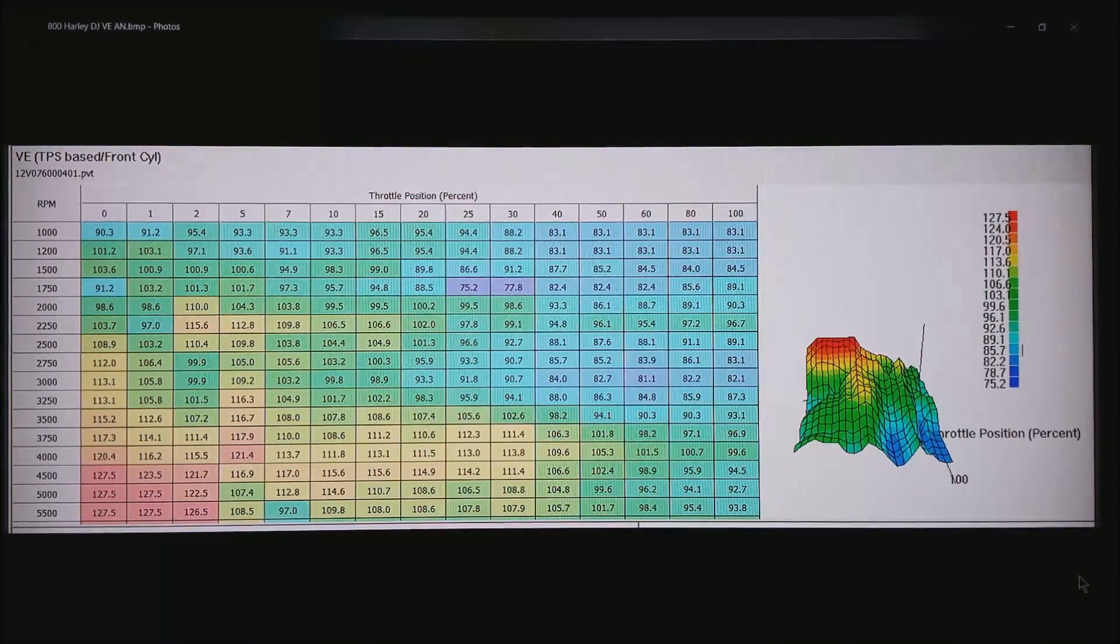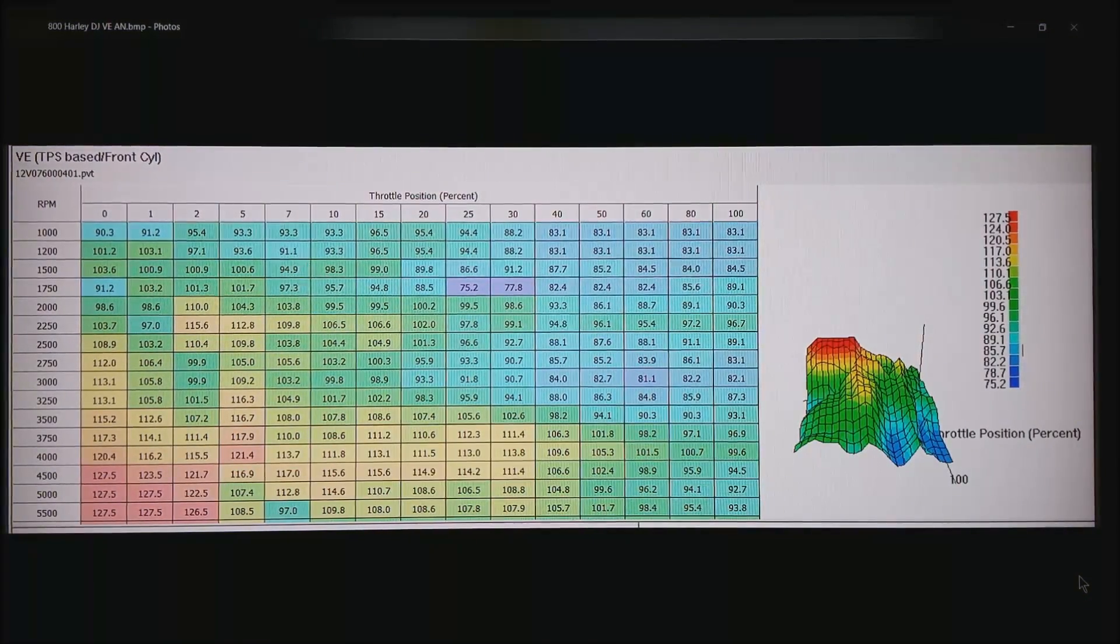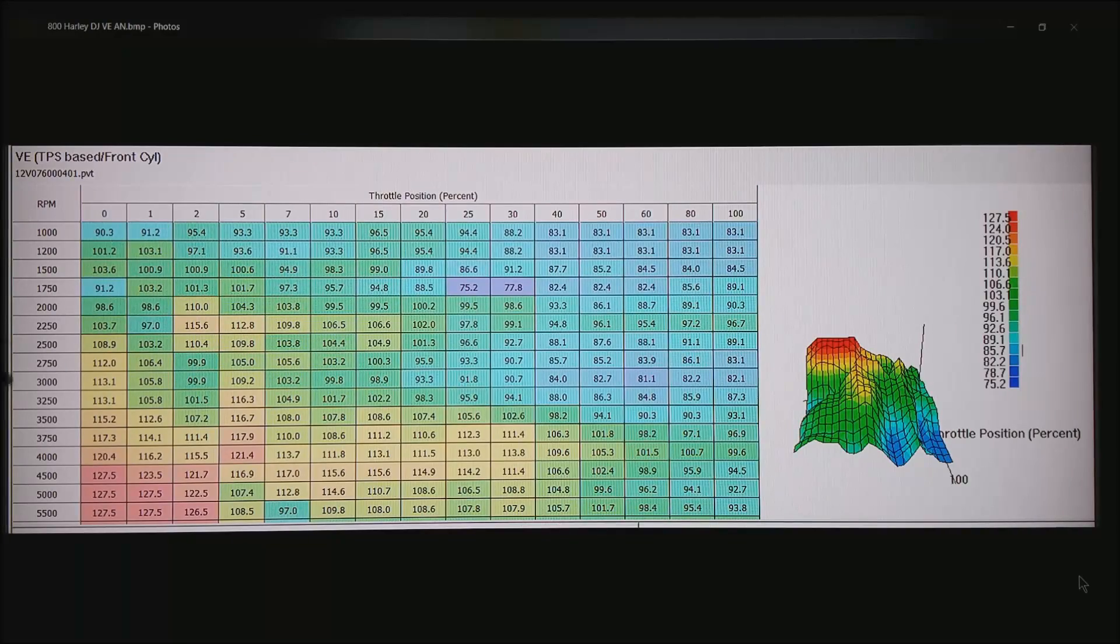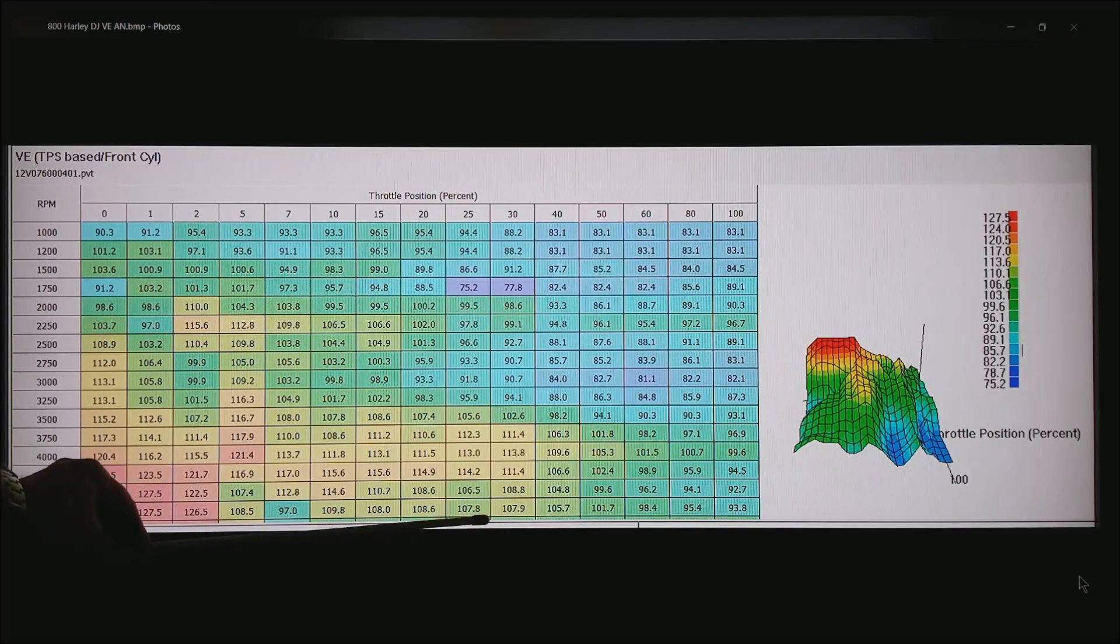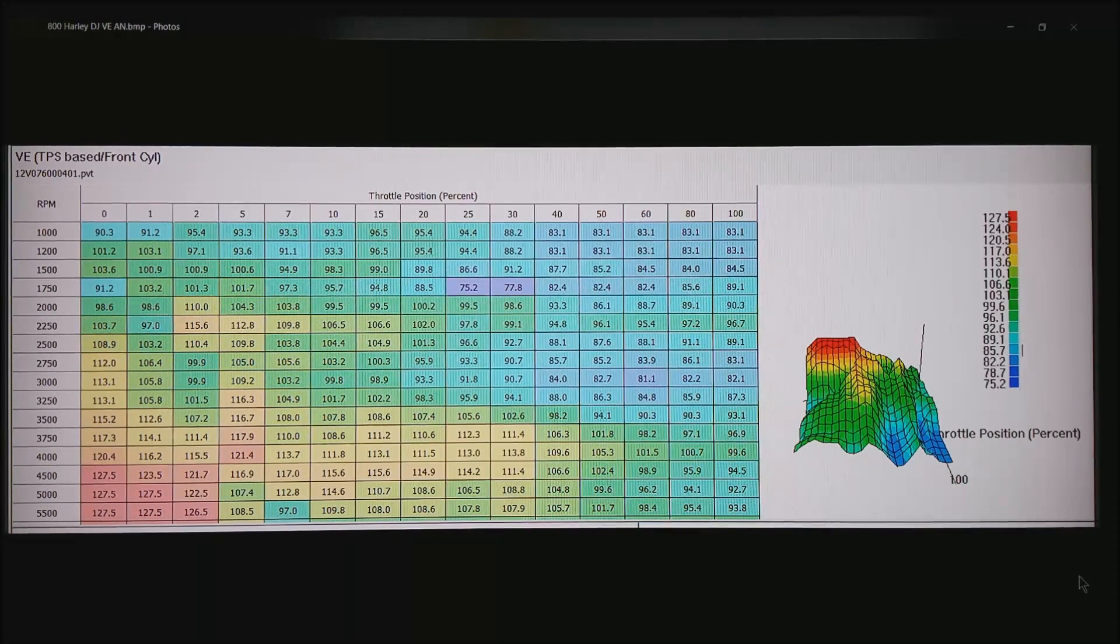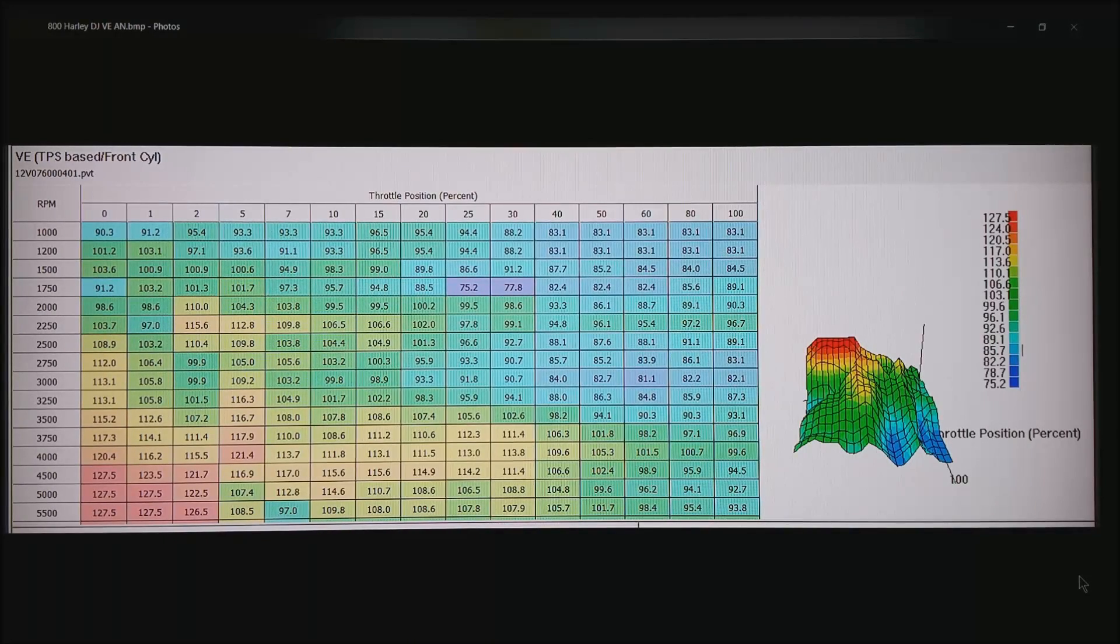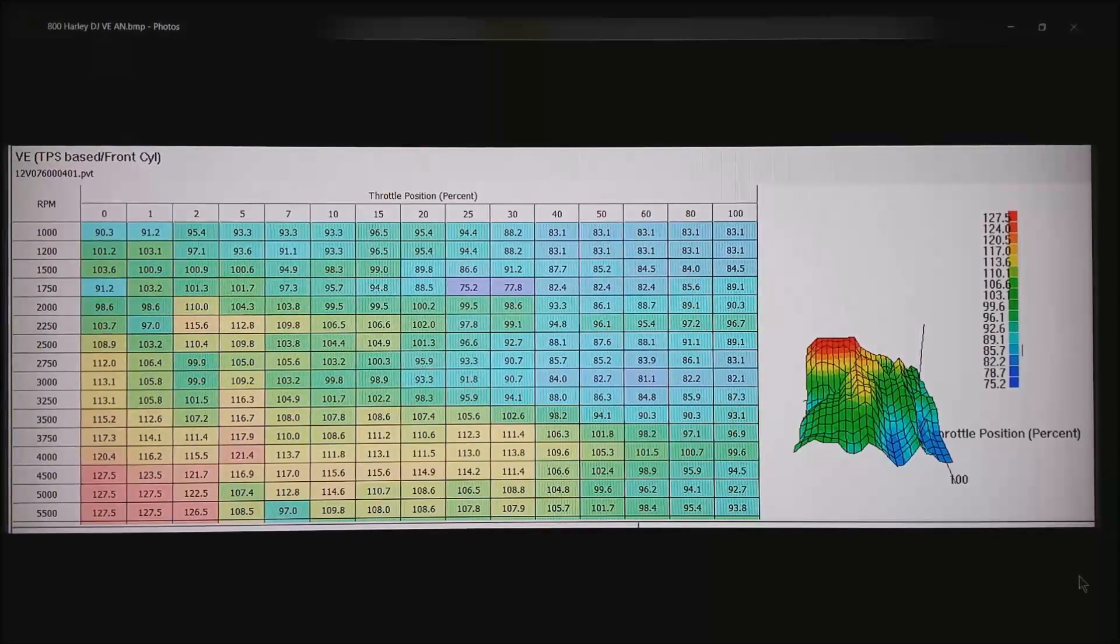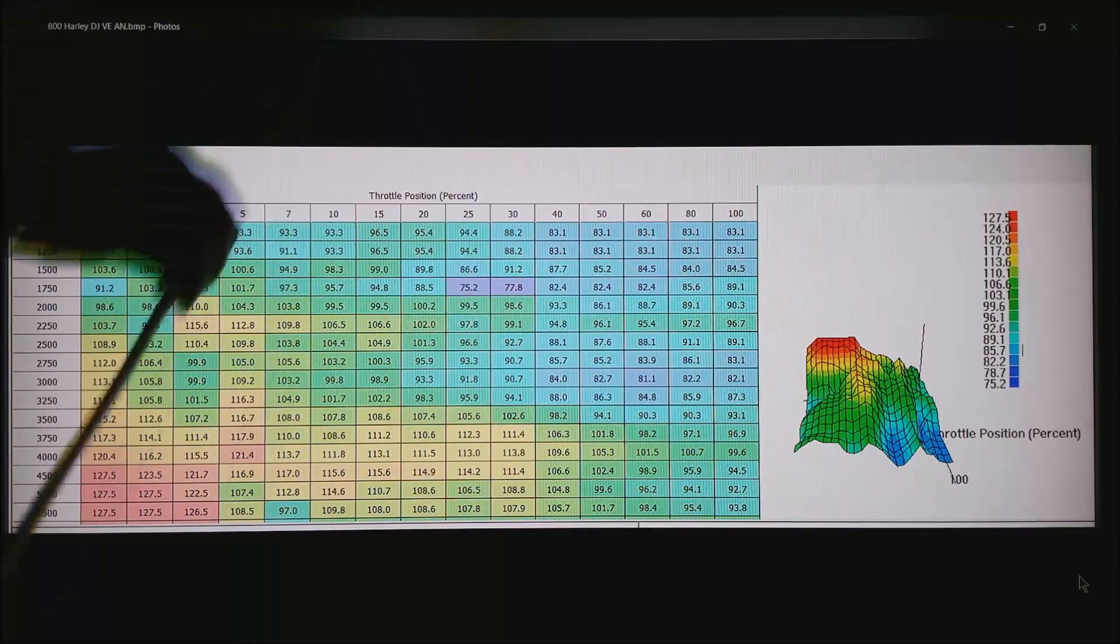Now we're looking at a TPS based system off of a Harley-Davidson. Again, this is just yet another lookup table. It happens to have the RPM on the left side. Across the top is throttle position. If you notice before we had the second load at the bottom. But it's all the same thing. It's just a lookup table. So for example, at 1750 RPM and 25% throttle, we get a volumetric efficiency of 75.